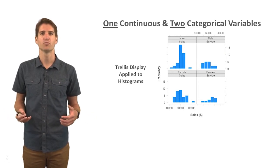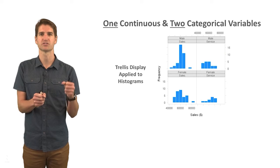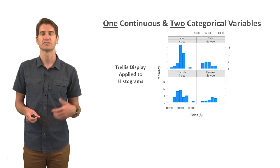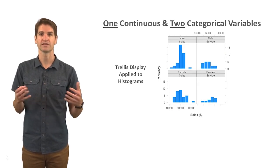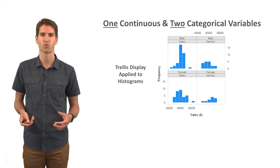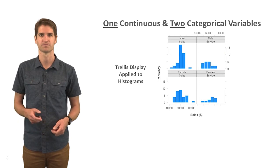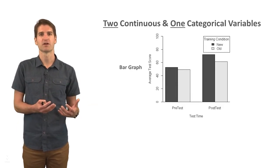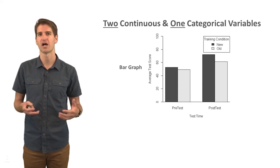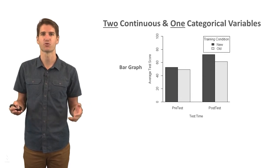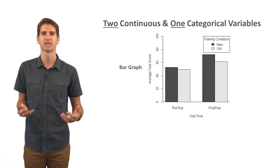If we have one continuous and two categorical variables, we might apply a trellis display to histograms. Here we have two categorical variables — sex of employee (male and female) and department (sales and service) — creating a two-by-two matrix. The continuous variable is the sales people have generated, and you can see how the distributions vary in each quadrant depending on whether someone is a male in sales, a male in service, a female in sales, or a female in service. We can also look at displays for two continuous and one categorical variable, such as a bar graph for a training evaluation showing the average test score for the pre-test and post-test, with a categorical variable indicating whether people are in the new or old training condition.